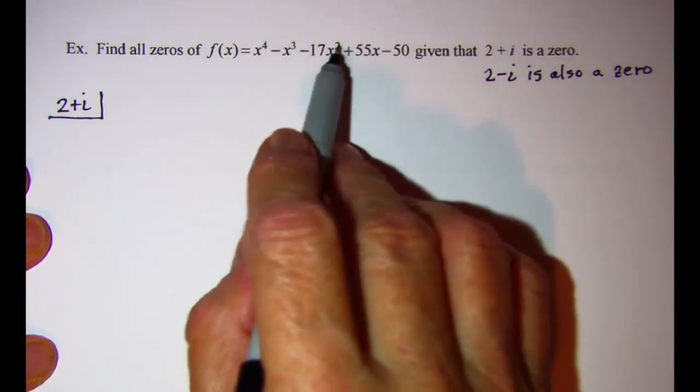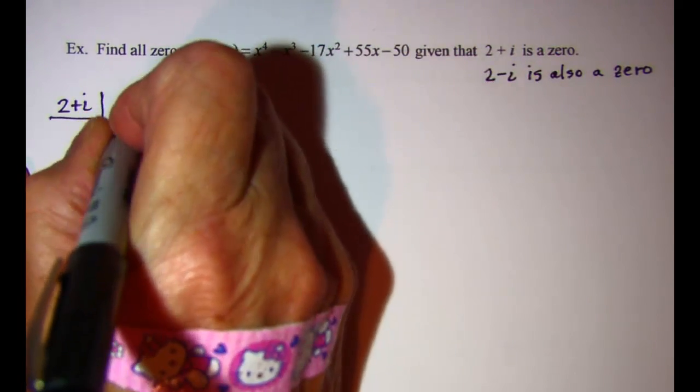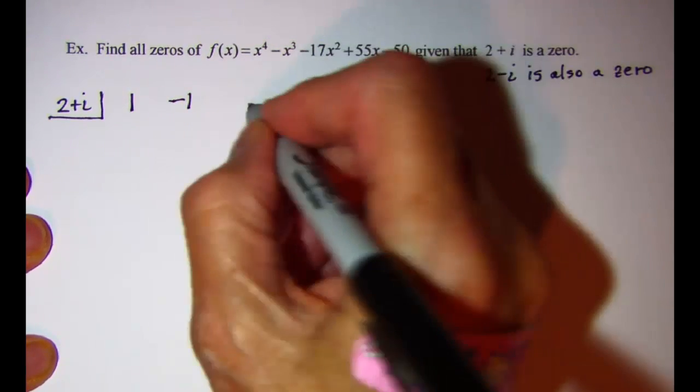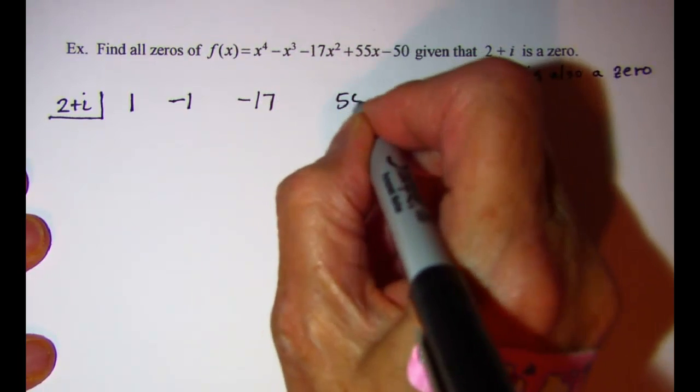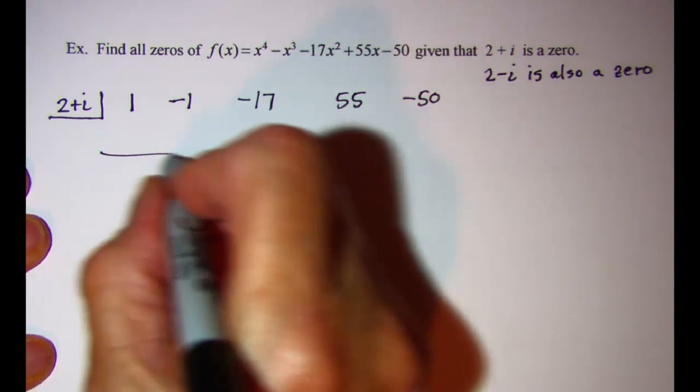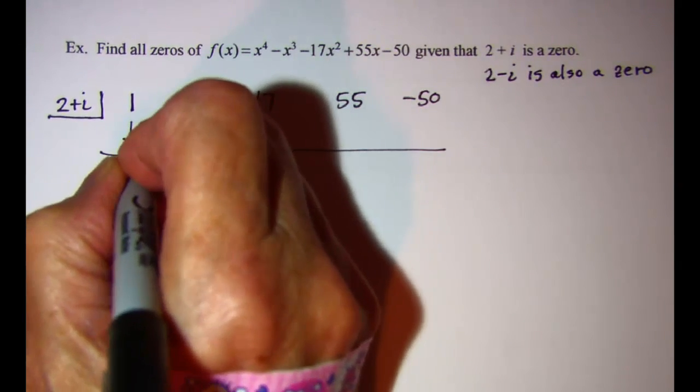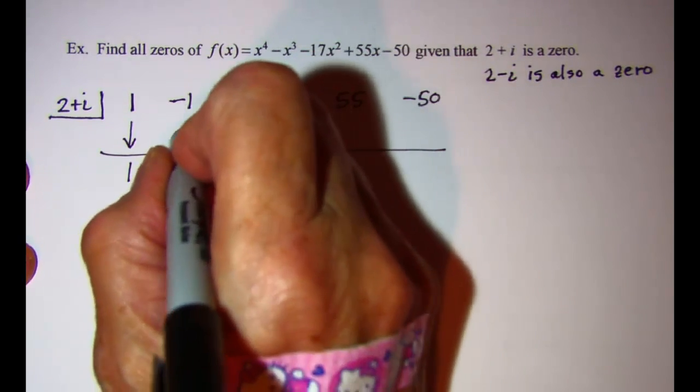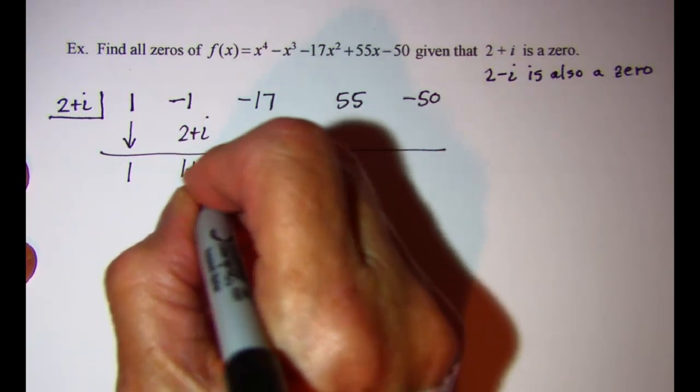Fourth, third, second, first, constant, so I'm not missing any terms. I'll just write my coefficients: 1, -1, -17, 55, and -50. I'll bring down my first term of 1. 1 times 2 + i is 2 + i. When we add, we get 1 + i.